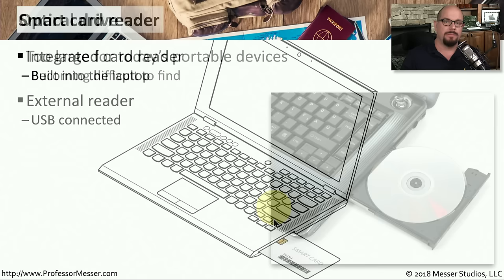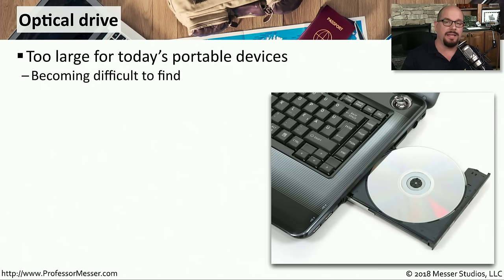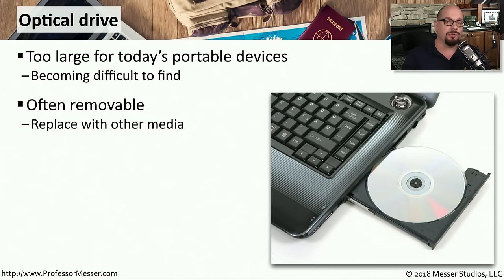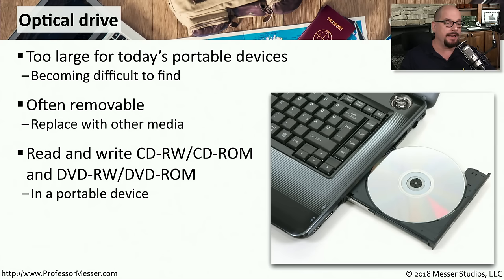Laptops keep getting smaller, and optical media is being used less and less, which is why you can't find as many optical drives on laptops today as in the past. If you do find a laptop with an optical drive, that drive can often be removed and replaced with a separate storage drive or other component. It's useful to have one that can both read and write — such as a CD-RW, CD-ROM, DVD-RW, or DVD-ROM — so you can use optical media as a backup medium no matter where you are.